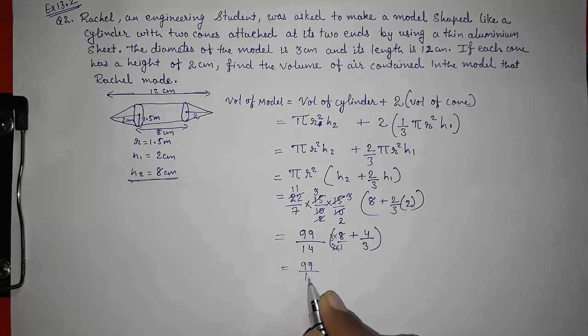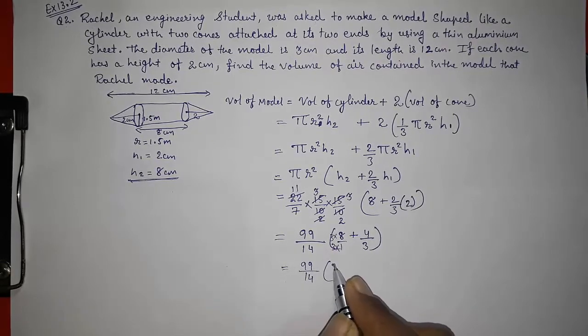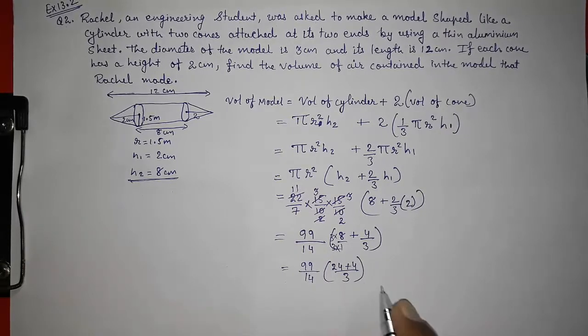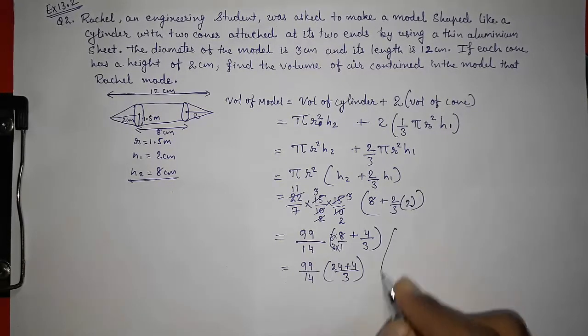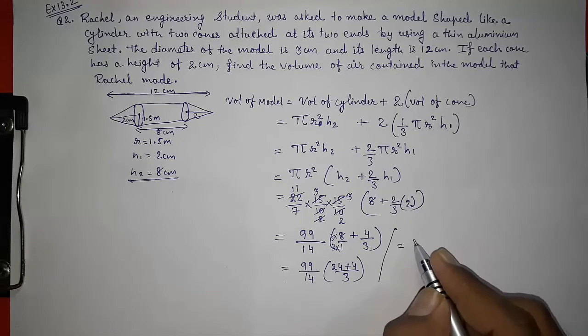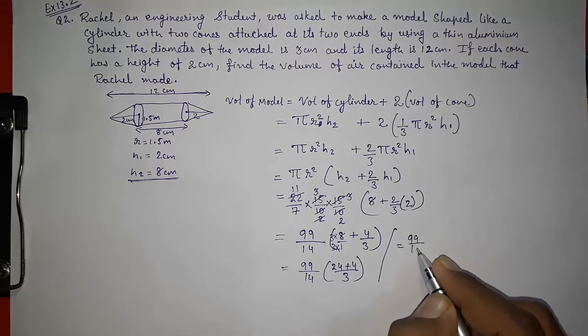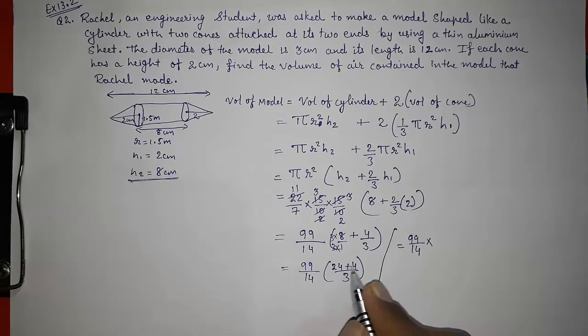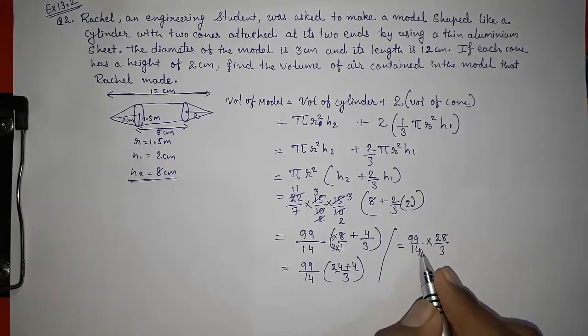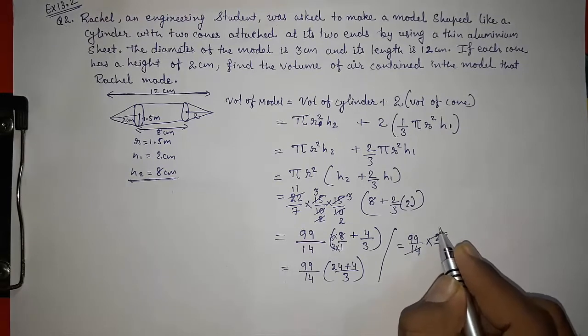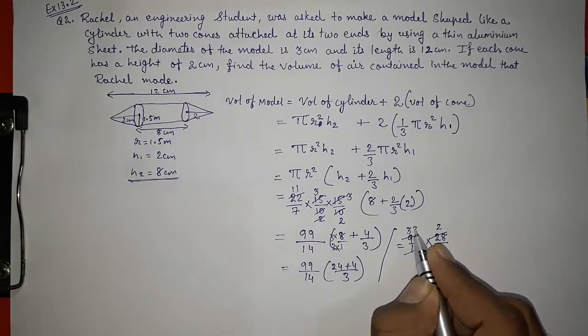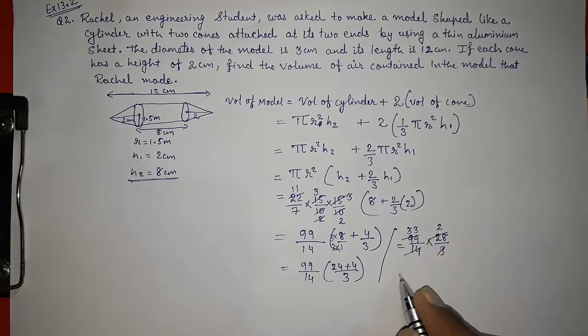99/14. It will be 24 plus 4 by 3. So we can find out. I am writing it here so that you can see. It will be 99/14 into 24 plus 4, 28/3. Now you can cancel. 14 into 2. 3 into 33. So 33 into 2.